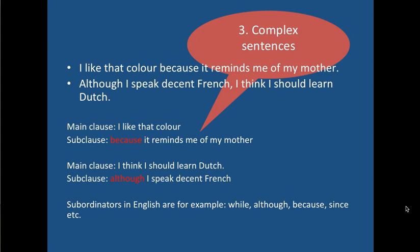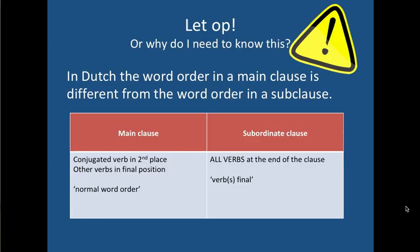So 'because' and 'although' are called subordinators. Other examples in English are: while, although, because, since, etc. The reason why it is important to know this is because Dutch has a different word order in the subclause from the word orders we've discussed so far. In a main clause — which is what we've done so far — you have the conjugated verb in second place and all the other verbs in final position. And I'll call that normal word order. In a subordinate clause, all verbs are pushed to the end of the clause.